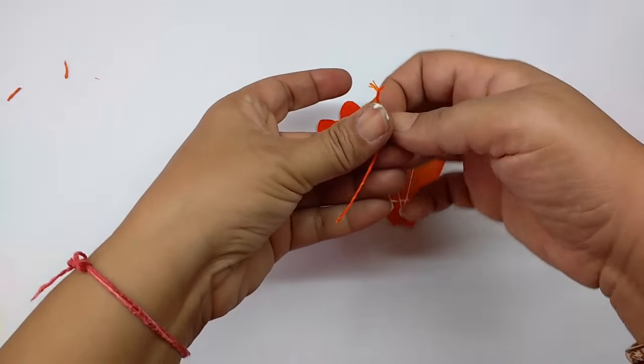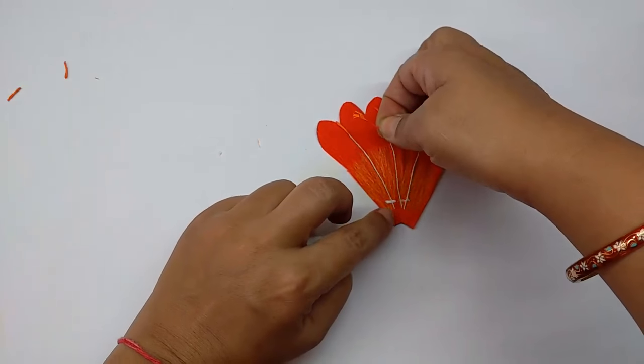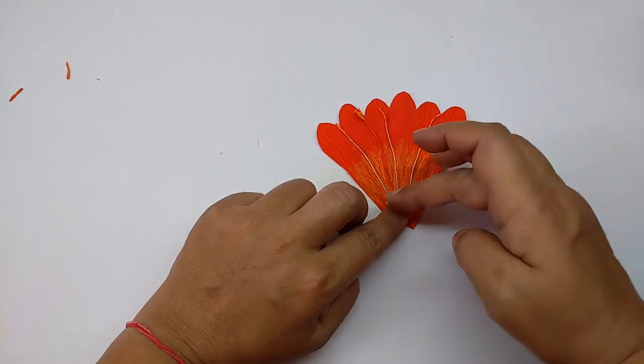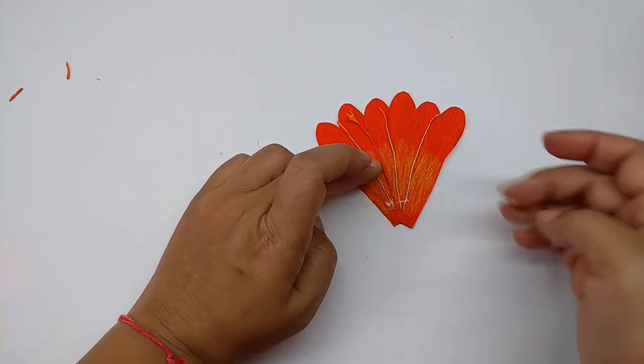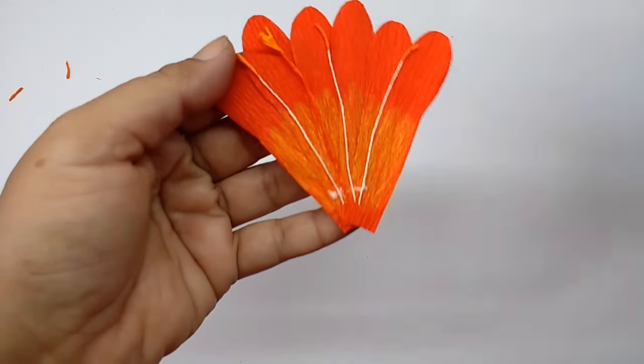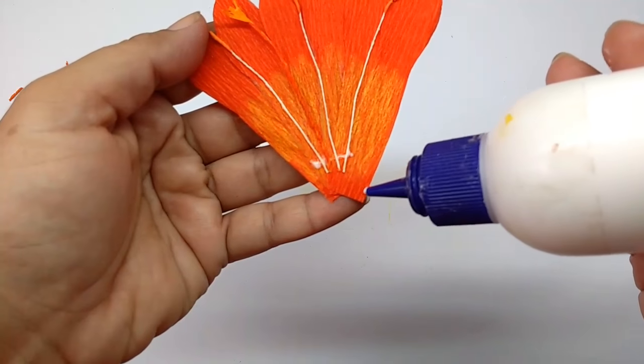Just roll the strip. This is a stigma. Open out the cuts that we made and stick this also on the glue. This is what it looks like.